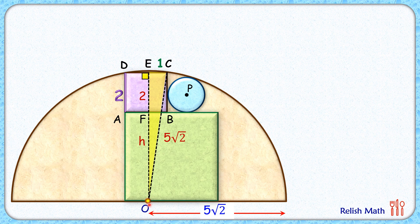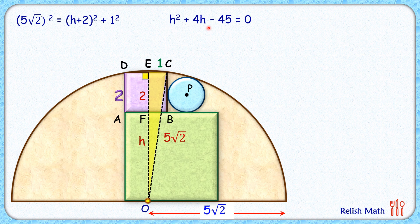Applying Pythagoras theorem in this yellow triangle, we will get (5√2)² = (h+2)² + 1². We will open the bracket and simplifying it we will get a quadratic in terms of h. Solving it by quadratic formula we will get h as 5 cm.